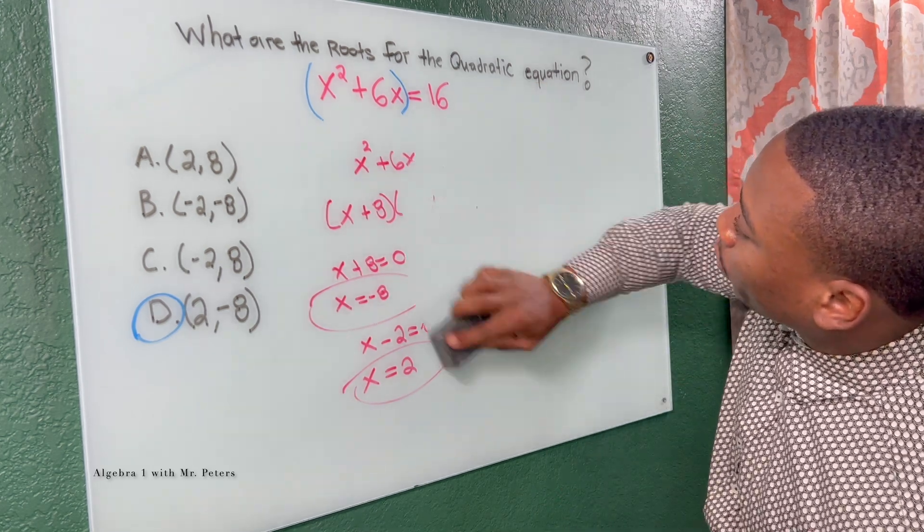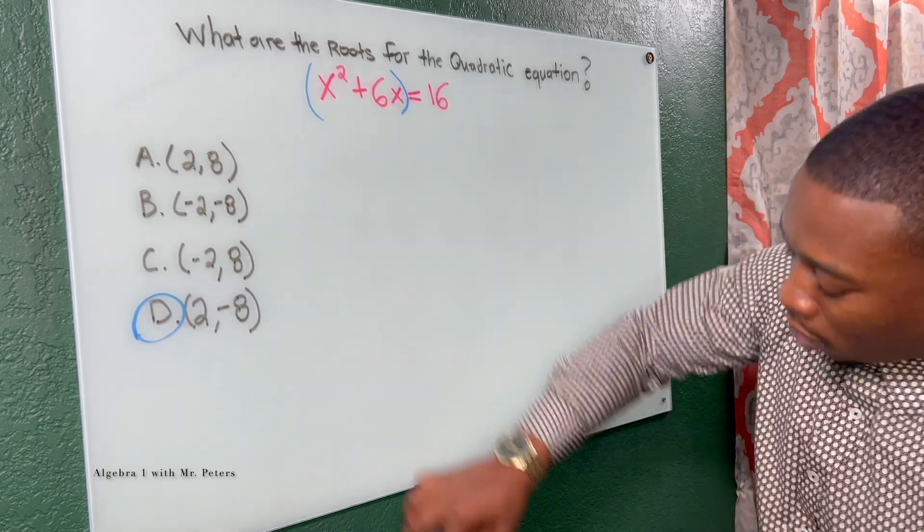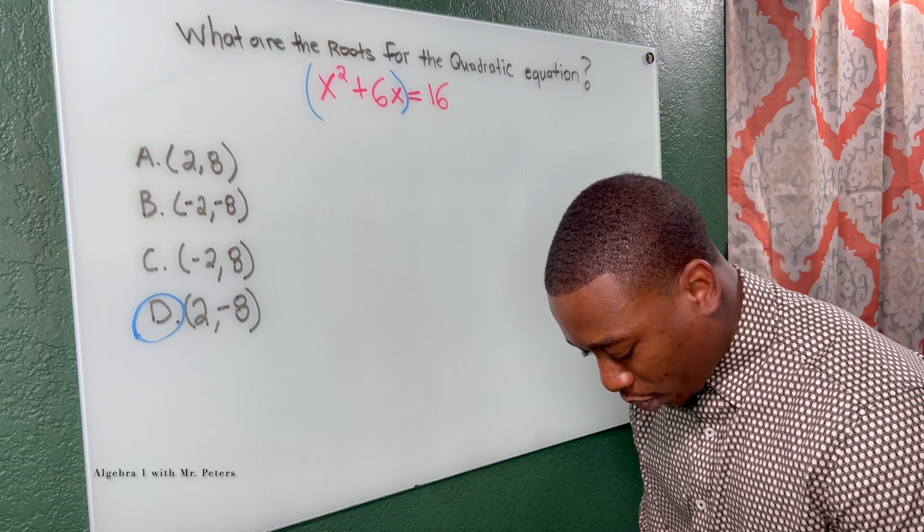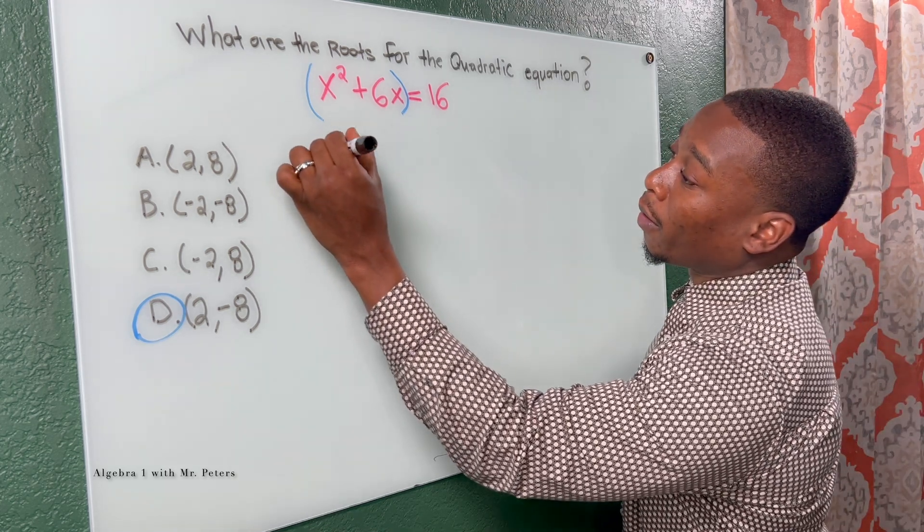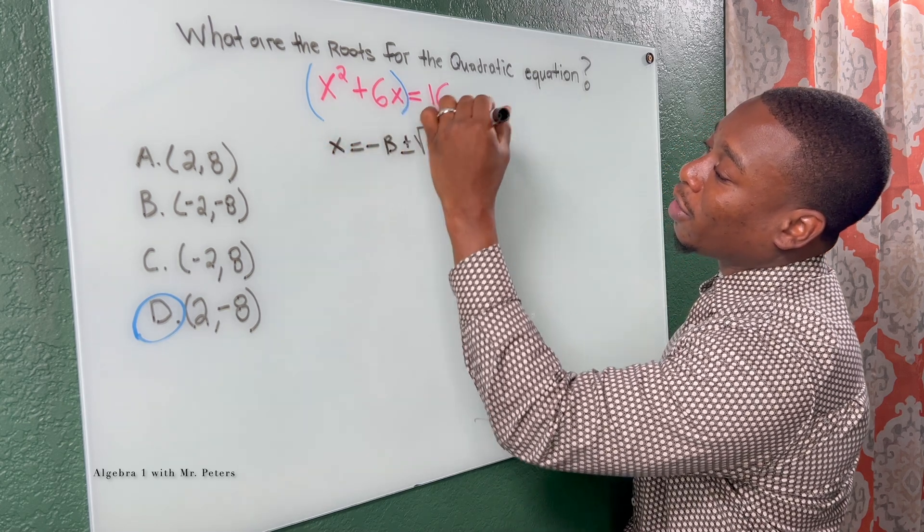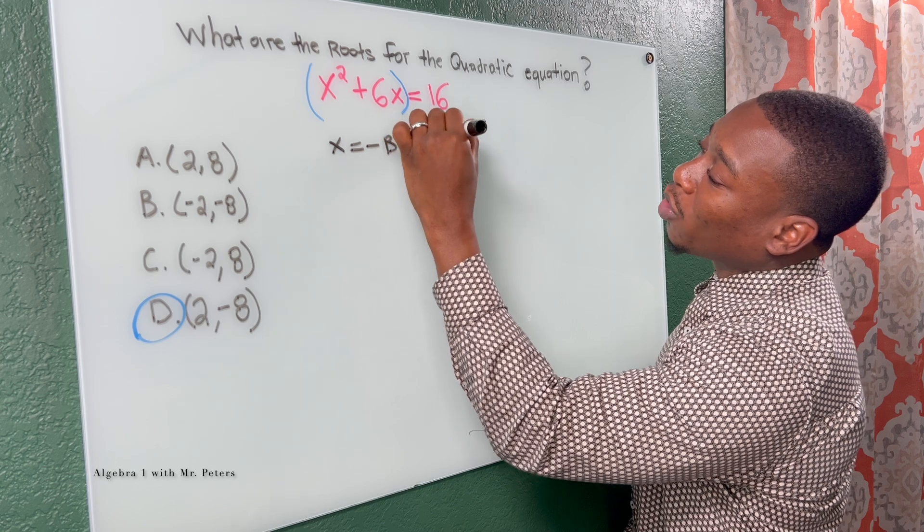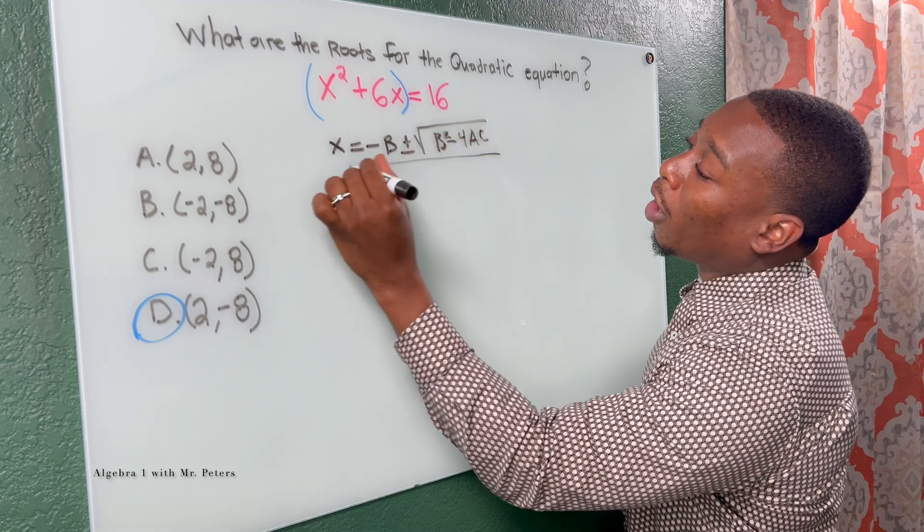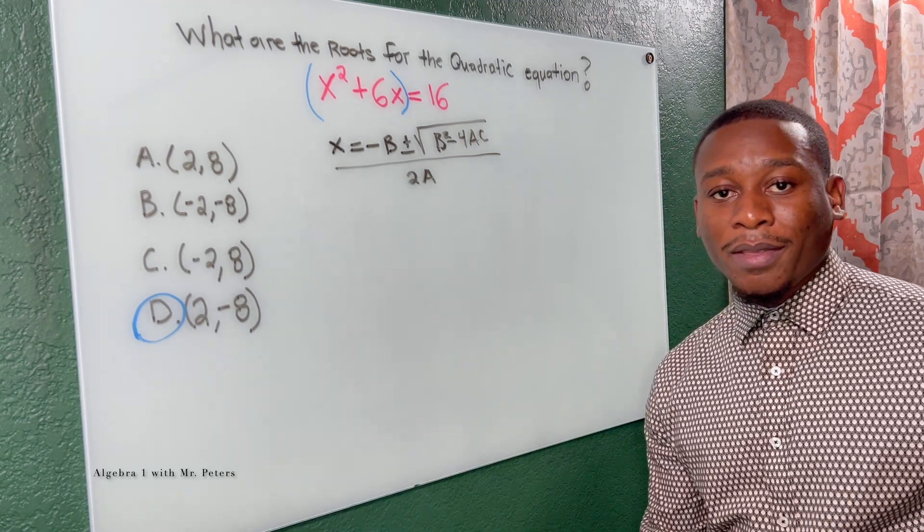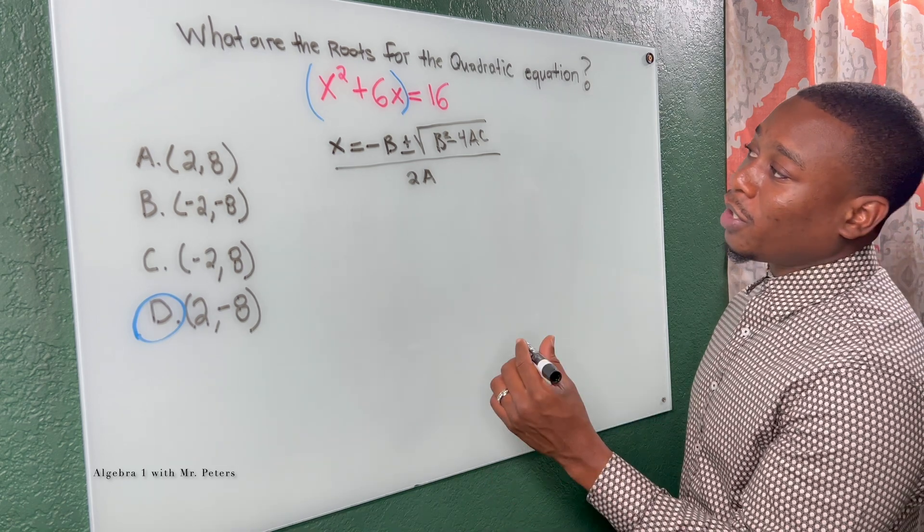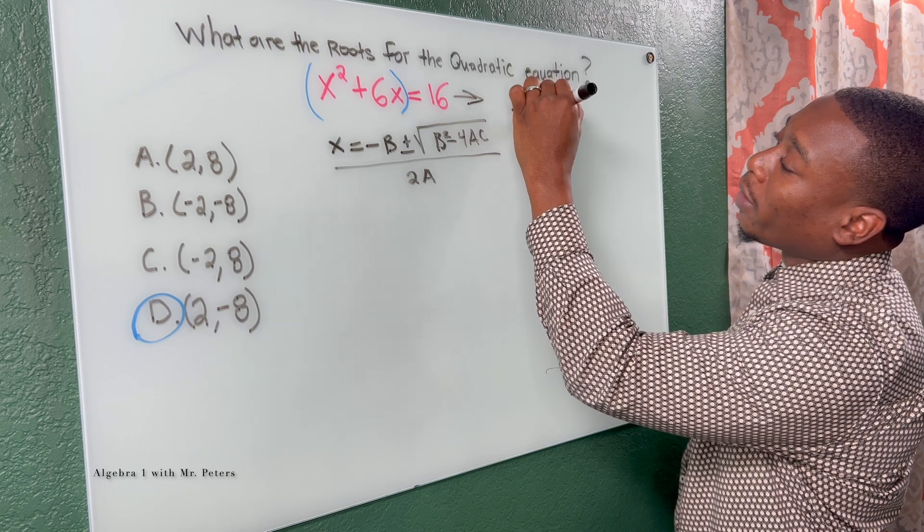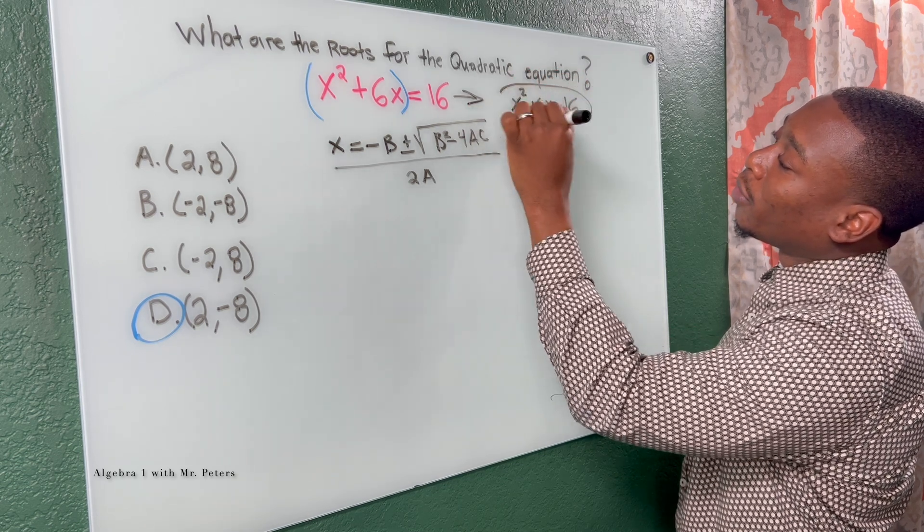Now the last method is going to be using the quadratic formula. So we're talking about this formula here: x is equal to the opposite of b plus or minus the square root of b squared minus 4ac all over two times a. Now for us to properly solve using this method, we first have to subtract 16 over to have a trinomial. So now we know our a, our b, and our c term. That's very important.